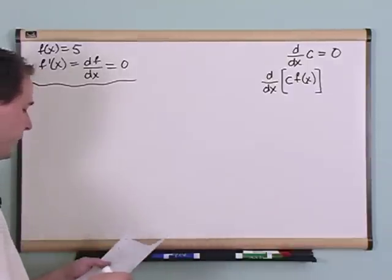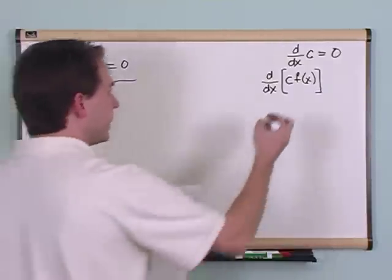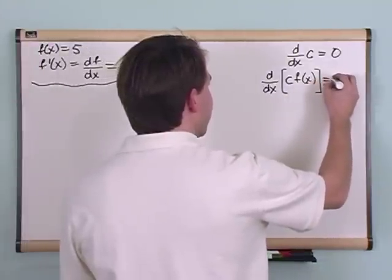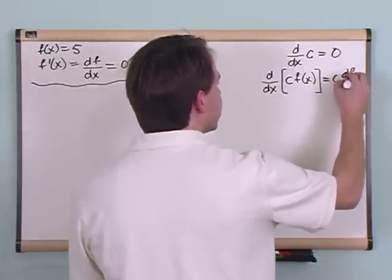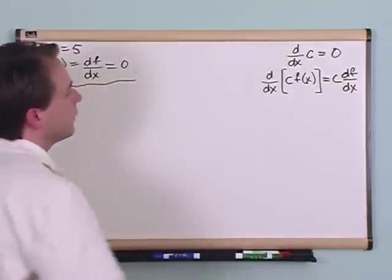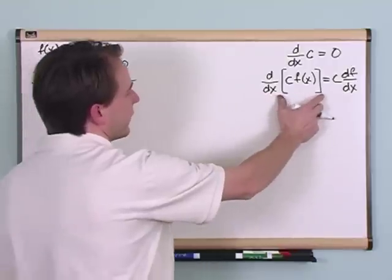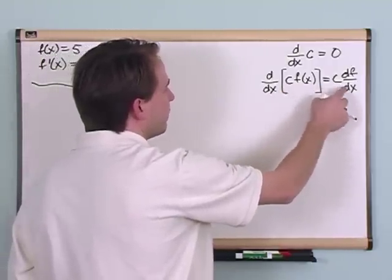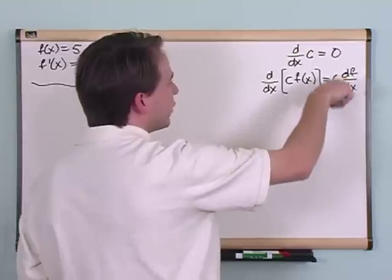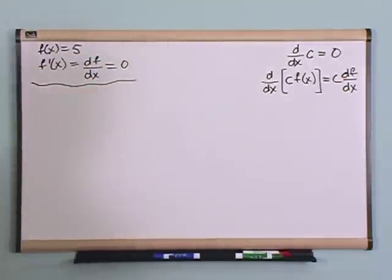These are things that are given to you as a theorem in your calculus book. This will be equal to the same constant c times df dx. So what it means is, if you're taking the derivative of some quantity that's like a number times a function of x, well then you just pull the number out, and then you take the derivative of the function, and that's what it is.